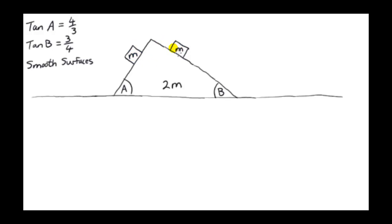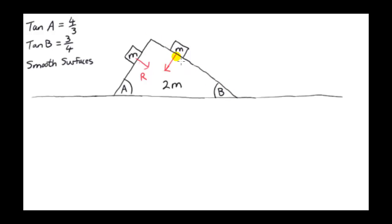In this next example, the two particles are not connected by a string. Both particles are identical, and they rest on a wedge of mass 2M. All surfaces are smooth. We are given both angles A and B, with angle A greater than angle B. Looking at the forces on the wedge due to the particles: the contact force due to the left particle has magnitude R, and the contact force due to the right particle has magnitude N. Because angle B is smaller — shallower — that particle exerts a greater force, so N > R.